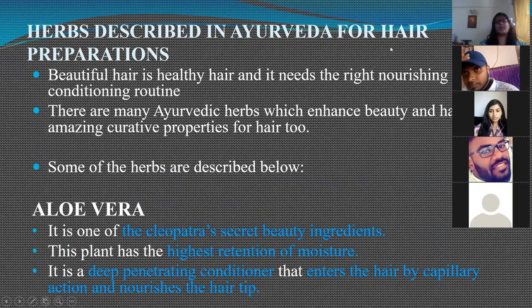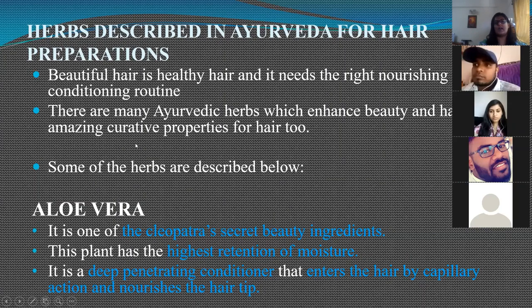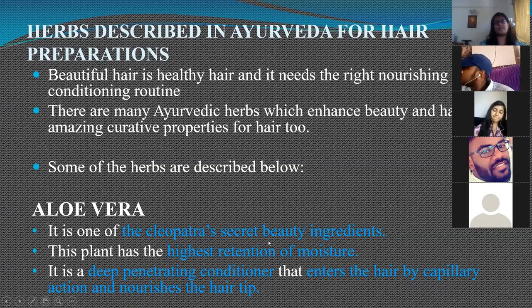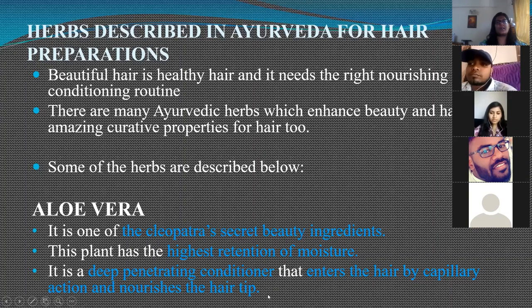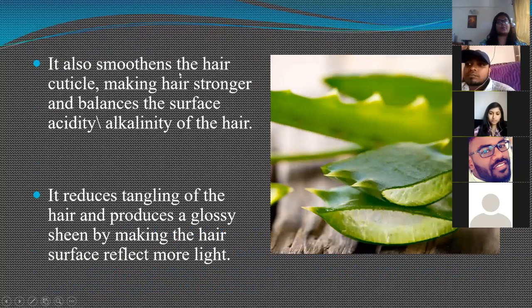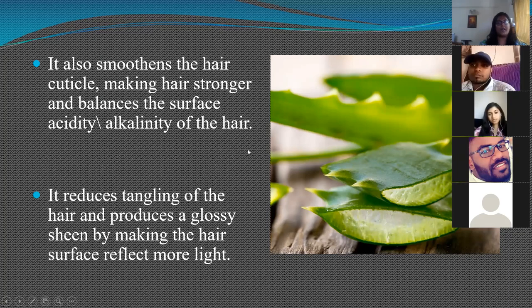Many herbs described in Ayurveda have amazing curative properties for beautiful, healthy hair requiring the right nourishment. One of the main herbs—historically known as Cleopatra's secret beauty ingredient—is aloe vera, which has high moisture retention. It is a deep-penetrating conditioner that enters hair by capillary action, nourishes the hair, smoothens the hair cuticle, makes the hair stronger, and balances the surface acidity and alkalinity of the hair.